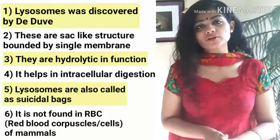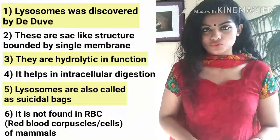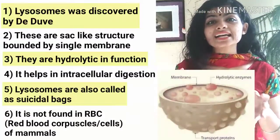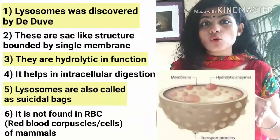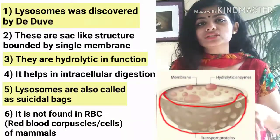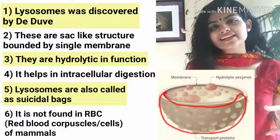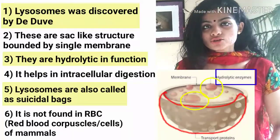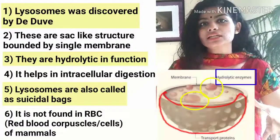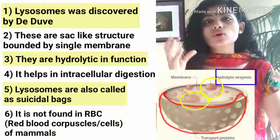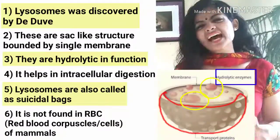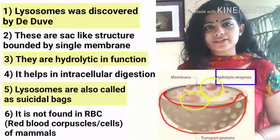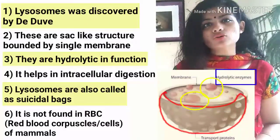Let's discuss some important points about the structure of lysosomes. Lysosomes are sac-like structures — you can imagine a sac-like cell organelle. These sac-like structures contain hydrolytic enzymes. That is what a lysosome is.